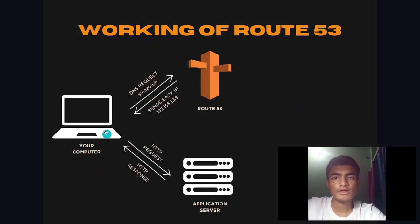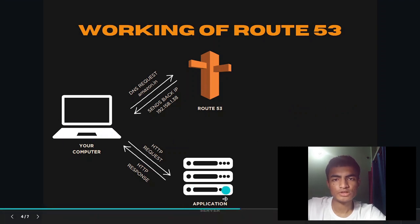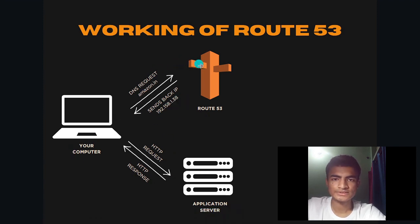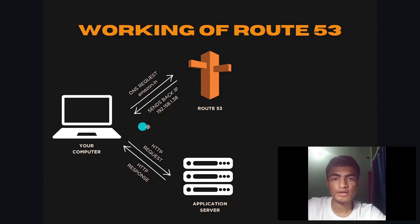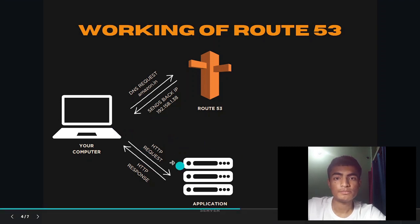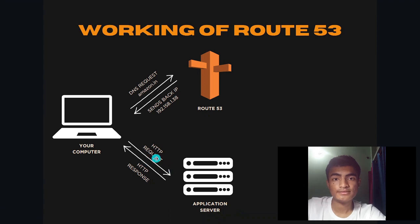Let's take an example. Say our computer wants to talk to an application server, and this application server is at some particular IP address. A browser will send a DNS request — for example, amazon.com — and Route 53 will reply and say, hey, it looks like the domain has this specific IP in my phone book, and it sends back the IP address. Now the computer has the IP address and it sends an HTTP request to the application server. The application server receives it and then gives us back an HTTP response.